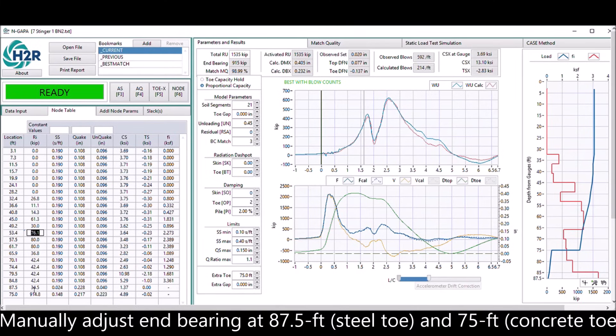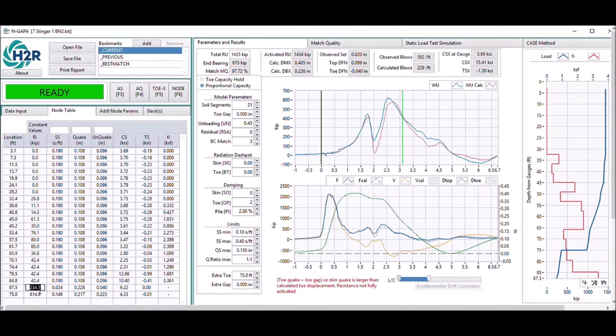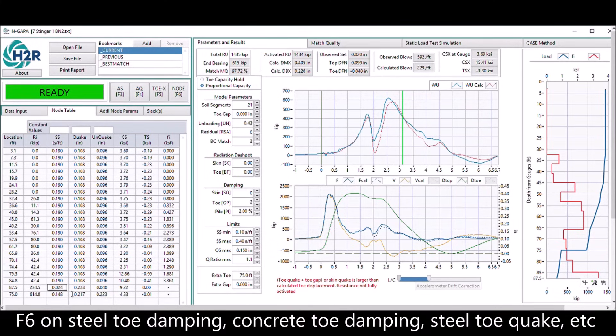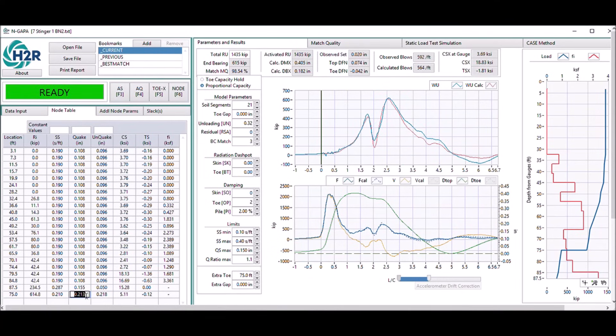Let us revise the end bearing a little bit on the stinger end bearing. Let's increase a little bit, and then let's drop the end bearing on the concrete part a little bit. And then on this cell, hit F6 to optimize on each cell, and then click to the next cell and hit F6. Now at this point, let's hit either F4 or F3 for semi-auto search.